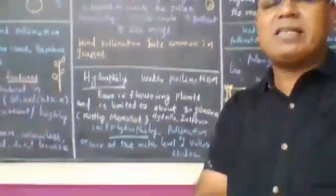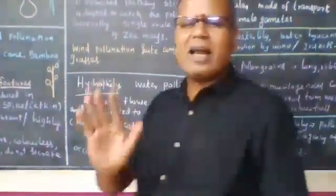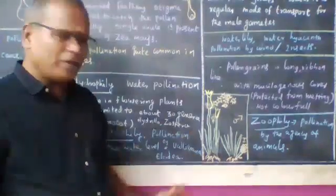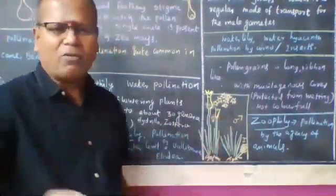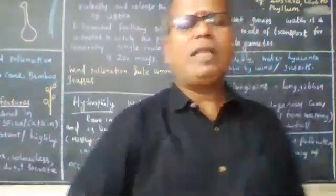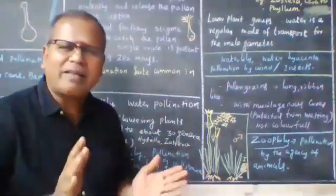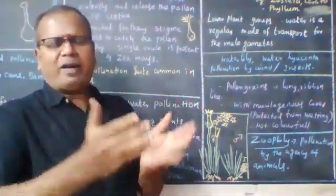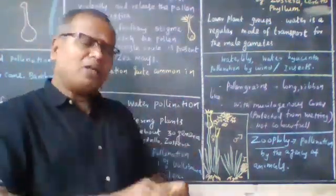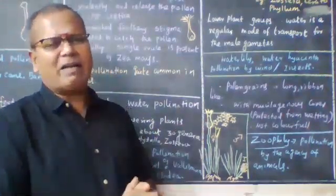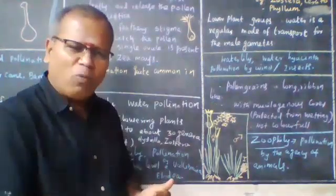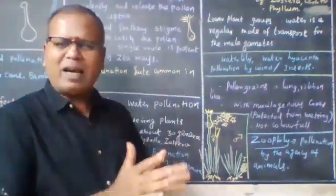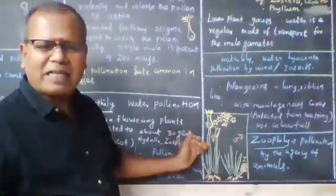Examples of hydrophily include Vallisneria and Elodea. Vallisneria is a classic example of a submerged hydrophyte. Hydrophytes can be free-floating, submerged, attached floating, or amphibious. Vallisneria is specifically a submerged hydrophyte.